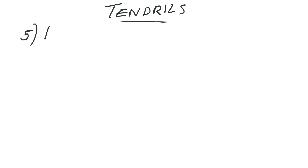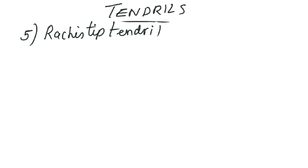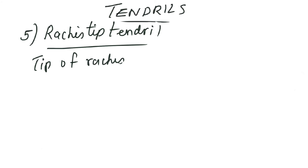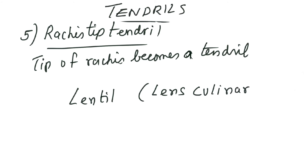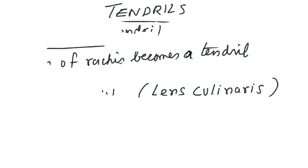Going on to the next case — here it is the rachis tip which develops into a tendril. The rachis is the axis on which leaflets are developing, and that axis tip becomes tendril-like. A good example is lentil, that is Lens culinaris. So it is the tip of the rachis — the secondary or tertiary axis on which leaflets are developing — which becomes a tendril. Examples are very important from the examination point of view.